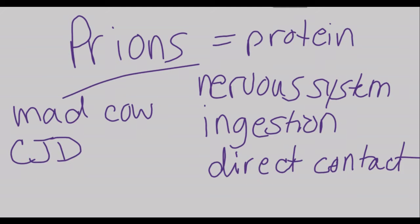Prion diseases are always fatal, but it is not contagious by other means from individual to individual, so you have to come into contact with their nervous system in order to transmit this malformed protein prion disease.